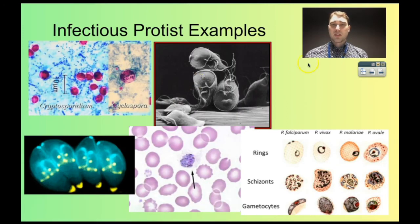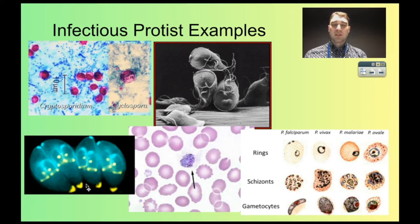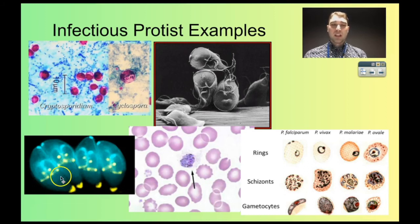Here are some other protist examples. This one here is called Toxoplasma gondii, which is carried by cats. It's a protist that affects the behaviour of mice and rats, making them less scared of cats, which makes them easier to be eaten — helping the parasite complete its cycle. Toxoplasma gondii can infect pretty much any warm-blooded animal, so many humans who have cats have infections with it. There are some theories that it might cause behavioural changes in humans.